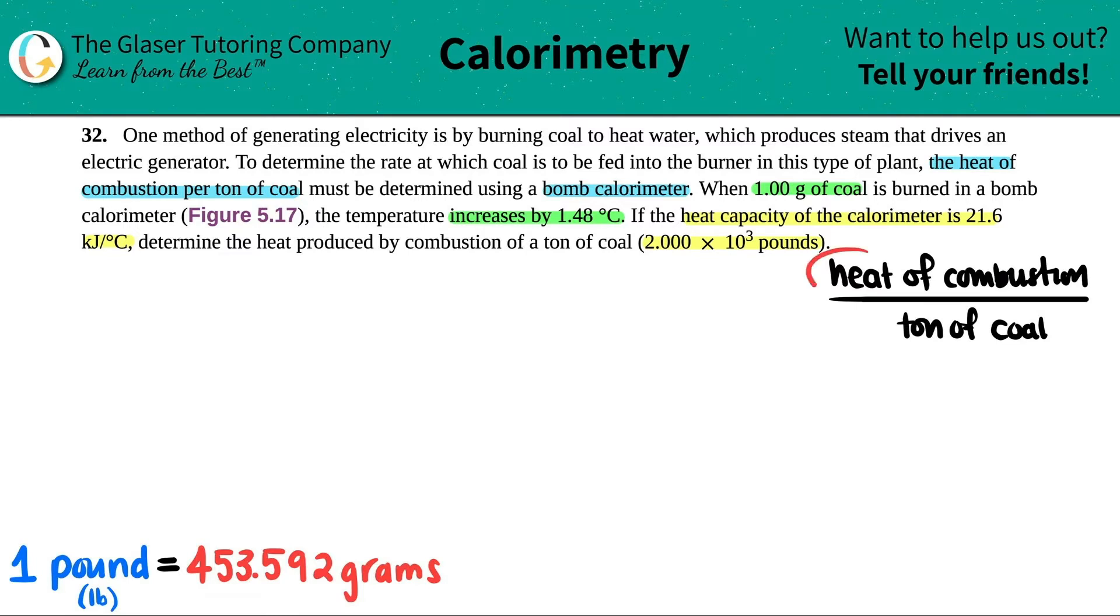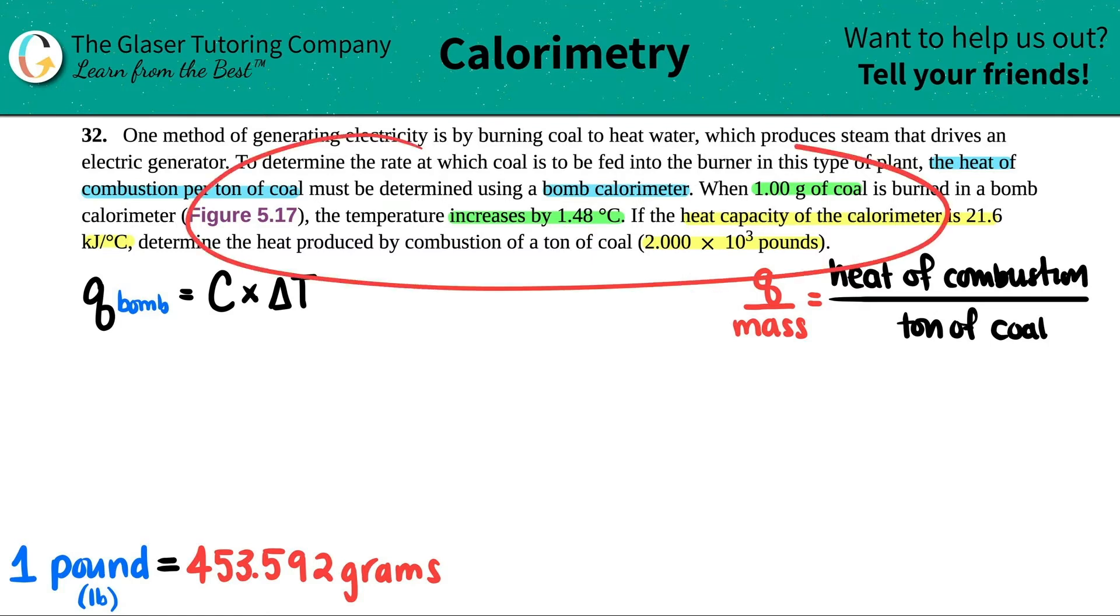So the first thing is we got to find out what the heat of the combustion is. Basically, this is just a Q value over a mass. So it's a bomb calorimeter. We're thinking of the bomb calorimeter formula. Now it's not the one where it's the Q of the reaction, where it's bomb plus water, because they didn't say anything about water in this case. So I don't have to take that into consideration. So all I'm going to do is just multiply by C, which is the heat capacity, times the delta T.